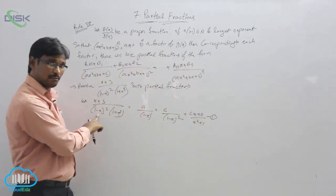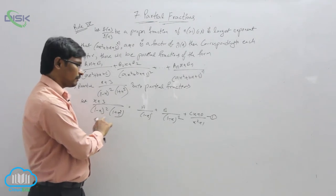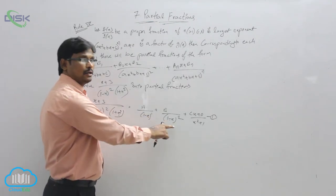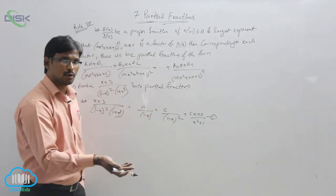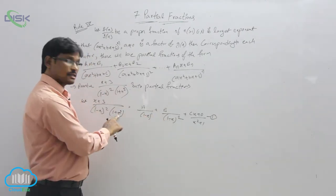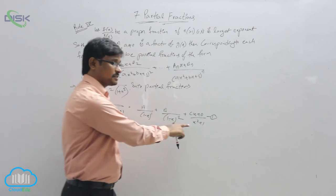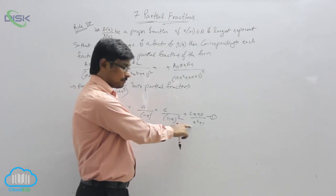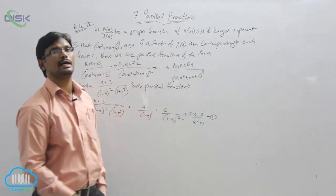Observe the first term, we have 1 minus x whole square, so we had to write 1 minus x whole power 1 and 2. If it is whole cube, we need to write one more time x². And here 1 plus x² is the quadratic term, so we need to write in numerator linear form.